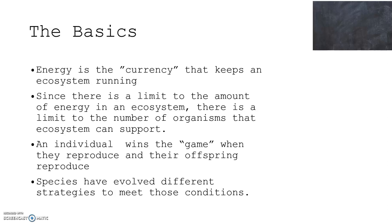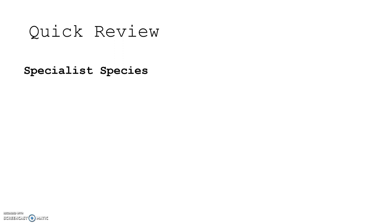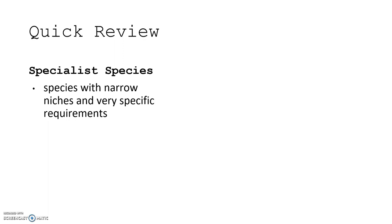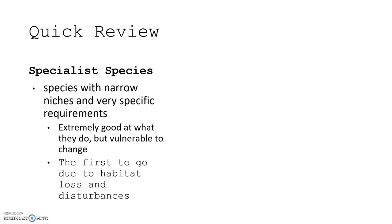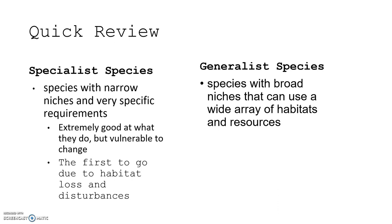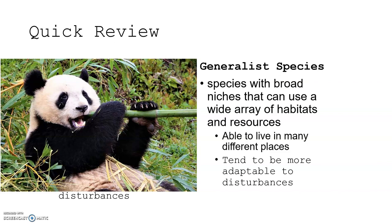Let's have a quick review. A specialist species is a species with a narrow niche and very specific requirements. They're extremely good at what they do, but they're very vulnerable to change because they have such specific requirements. They're the first to go due to habitat loss and disturbances, and often the first to become extinct. Generalist species are species with broad niches that can use a wide array of habitats and resources. They're able to live in many different places and tend to be more adaptable to disturbances.